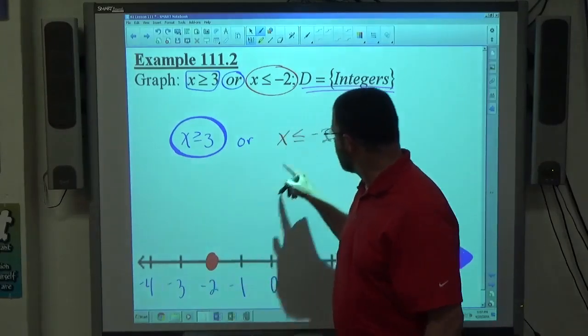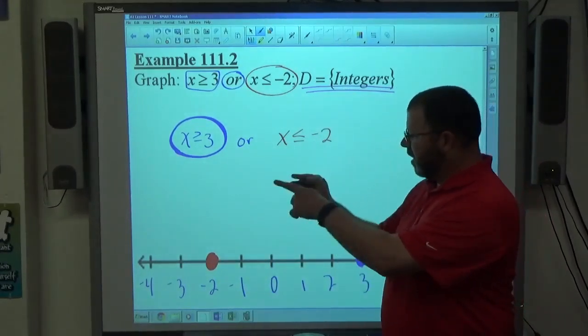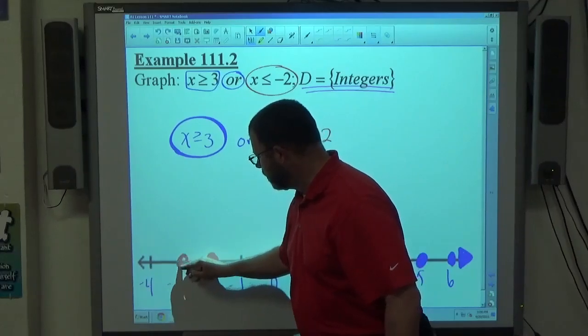So let's go negative 4, negative 3, negative 2, negative 1, 0, 1, 2, 3, 4, 5, 6.